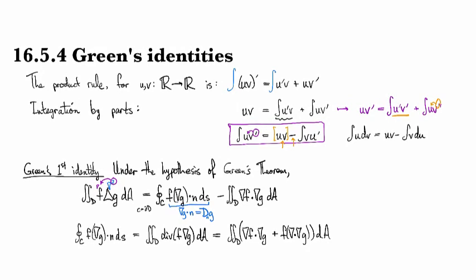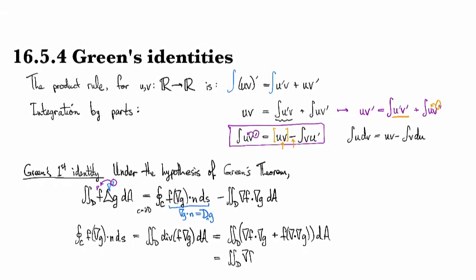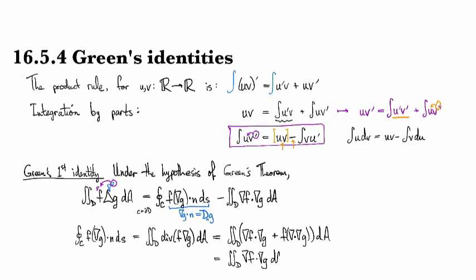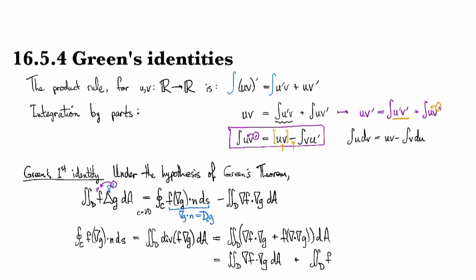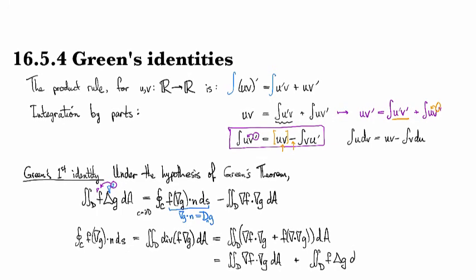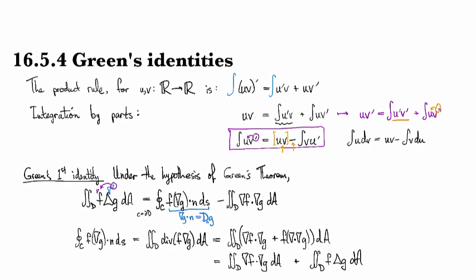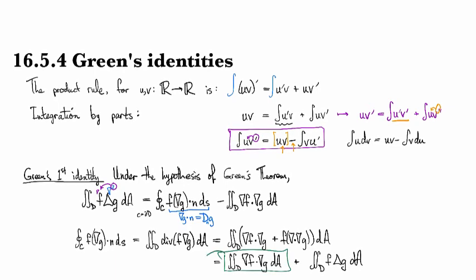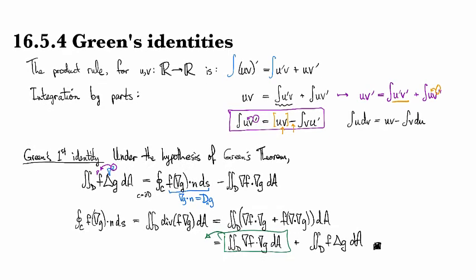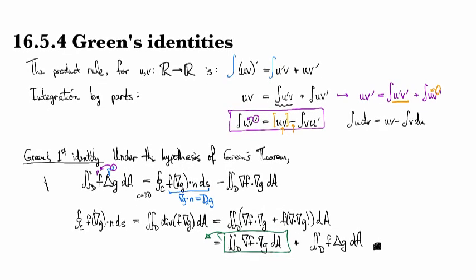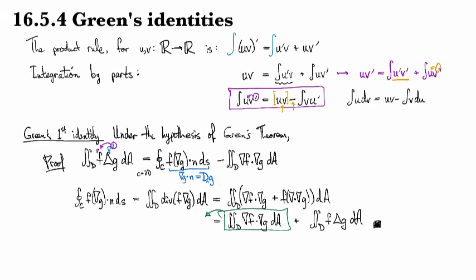And then that just becomes the bits and pieces that we're interested in. So the first one is the gradient of f dotted gradient of g dA. And then the second one is the double integral of f times the Laplacian of g dA. And then you can just subtract to get this one on the other side, and you have the identity. That's a box for the end of proof.